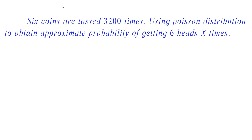We are given that the number of tosses is 3200 times. Therefore, n is equal to 3200. Here we need to find the probability of getting 6 heads x times. For that, we have to find the parameter P. We know that the probability of getting a head on a single toss of a coin is 1 by 2.